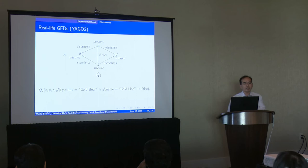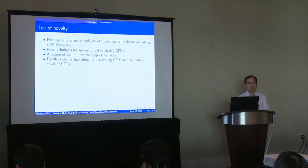Let's conclude. We found an interesting GFD on the knowledge graph. A person cannot receive both Golden Bear and Golden Lion for the same movie because both festivals require that the movie has to be first released on the festival.